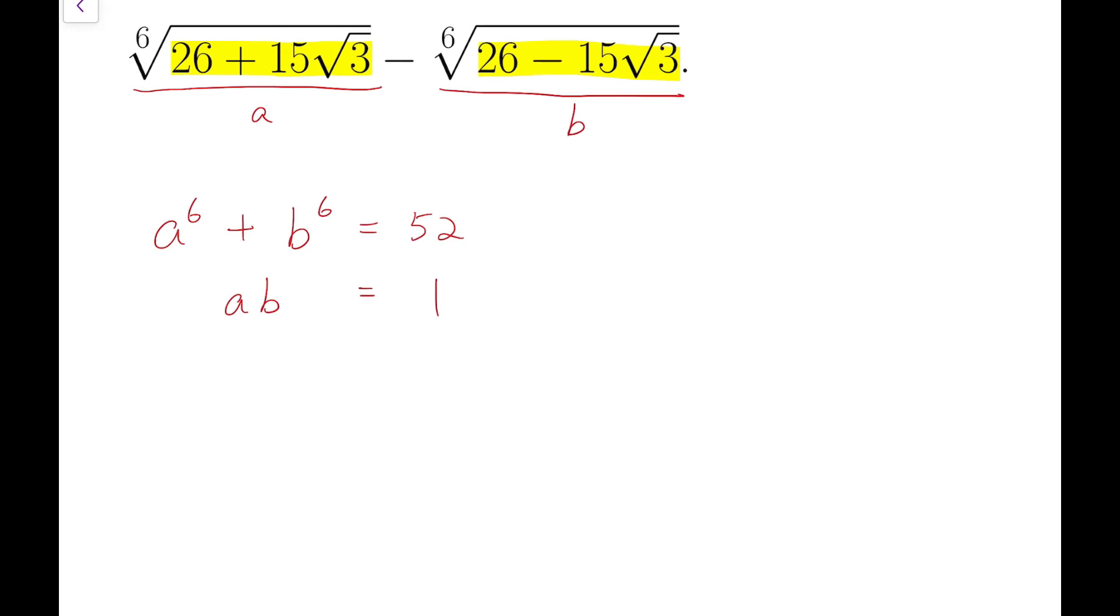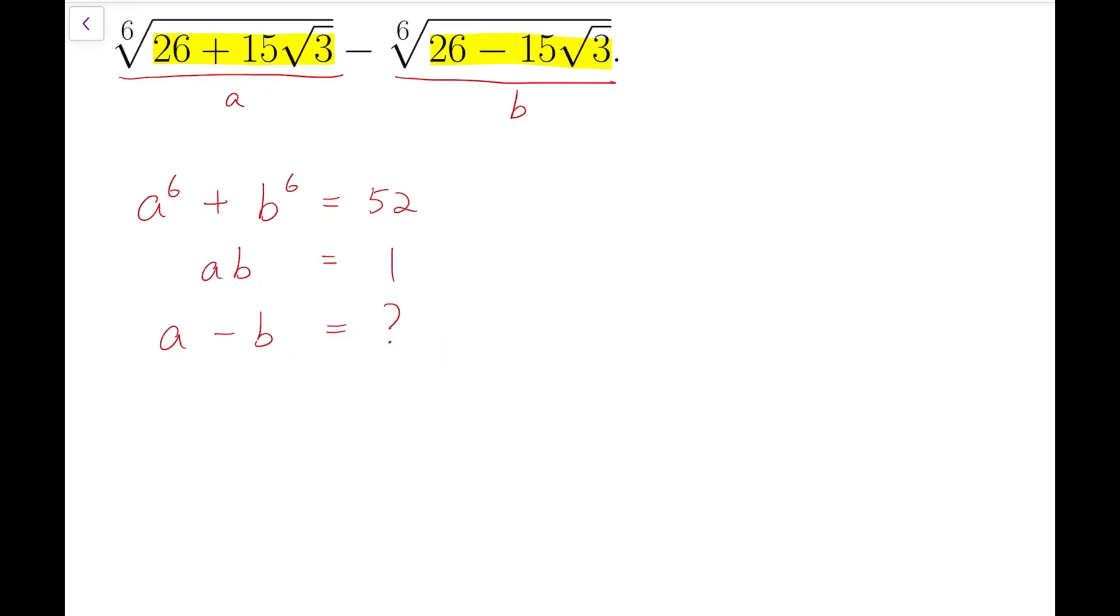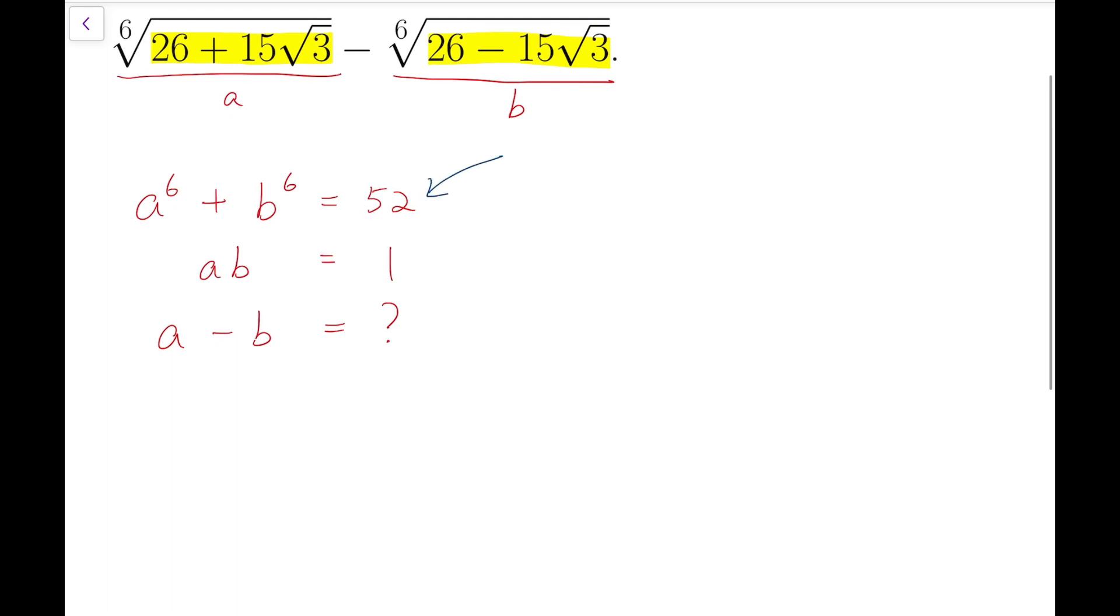And of course I have to find the value of A minus B. From our first equation, we can say that the left-hand side can be factorized into (A² + B²)(A⁴ - A²B² + B⁴) = 52.